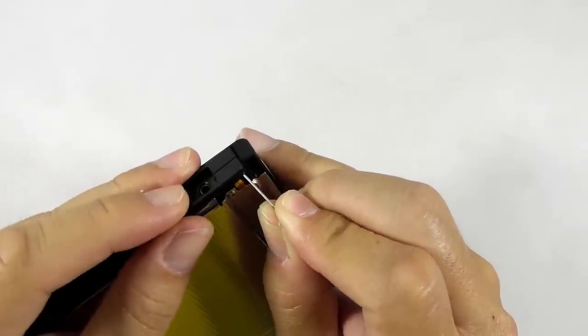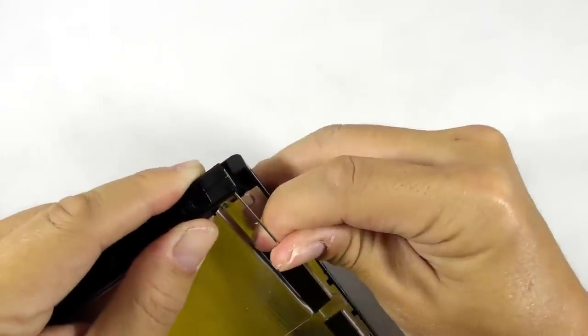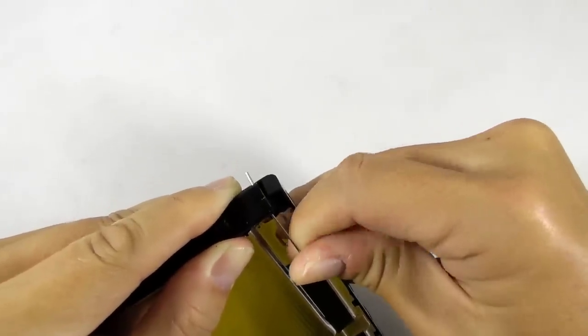At first, it might be hard to push the metal pin out of the slider, but soon after you found the sweet spot, it is easy to do. Push the metal pin all the way until you can remove it completely from the slider.